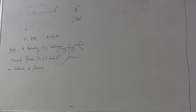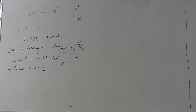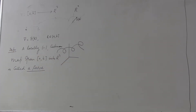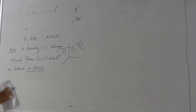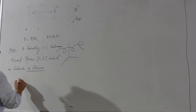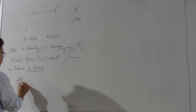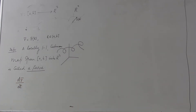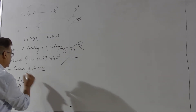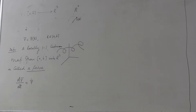A locally one-to-one continuous map from a closed interval [a,b] into R³ is a curve. Throughout, we will assume that the map is not just continuous but differentiable, because we want to study the geometry of the curve. In order to study geometry, we need the notion of differentiability, so we consider the derivative. The derivative of r with respect to the parameter t will be denoted by r-dot.